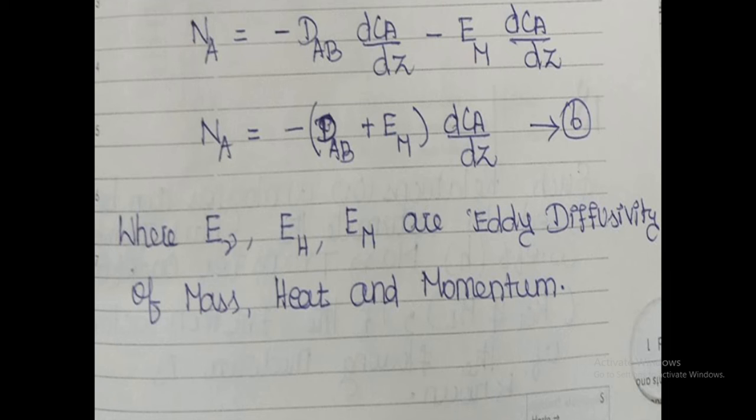Combining both equations, the total mass flux equals the mass flux due to viscous flow plus the flux due to turbulent flow. So Na equals minus DAB times dCa/dz minus Em times dCa/dz. Taking the common term, the final expression is: Na equals minus (DAB + Em) times dCa/dz, where Em is the eddy diffusivity of mass transfer.